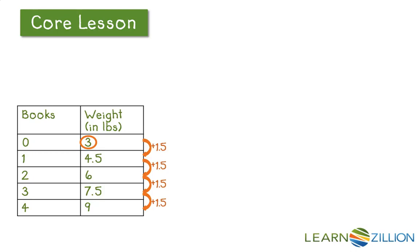When I have 0 books, my value in weight is 3. So that's my y-intercept. And my growth rate is that I'm adding 1.5 every single time. So I have this equation here. Y equals 1.5x plus 3. 1.5, of course, is my slope. And 3 is my y-intercept.